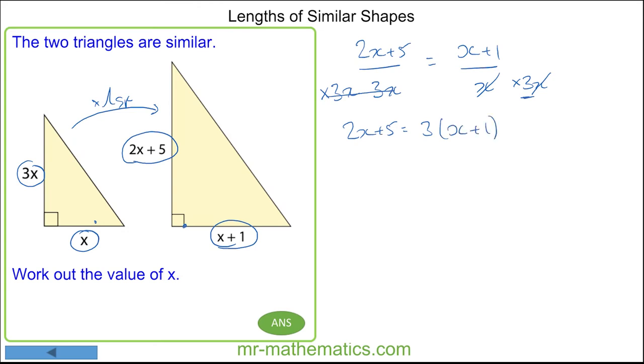Which lets expand out this bracket. So we have 2x plus 5 is equal to 3x plus 3.